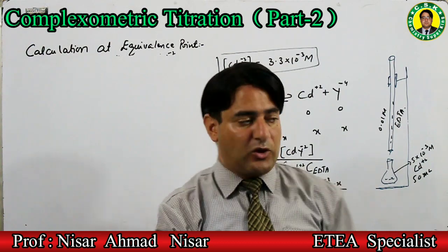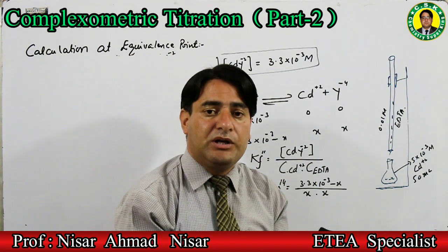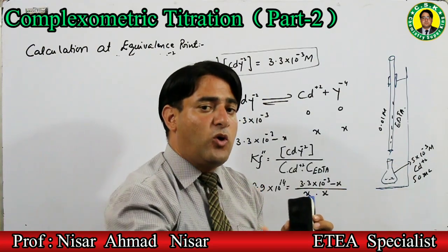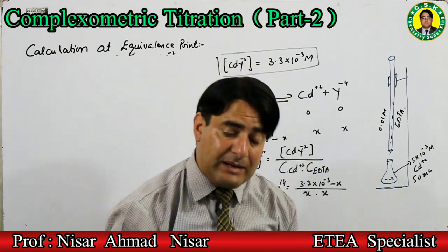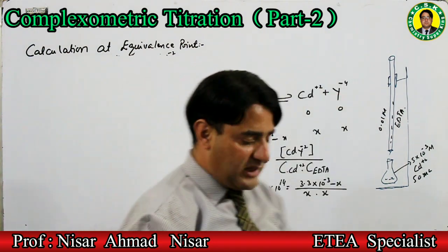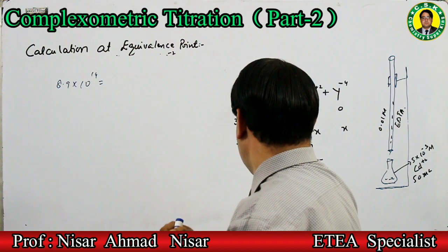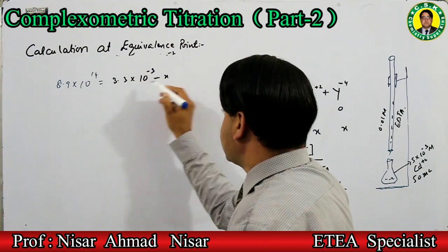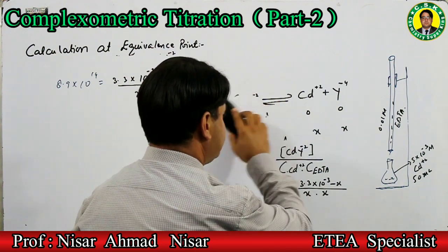x کی value وہ concentration ہوگی جو complex کی dissociation سے cadmium ion بنا۔ یہ cadmium ion سارا free نہیں ہوگا۔ Equation: 4.9×10¹⁴ = (3.3×10⁻³ − x) ÷ x²۔